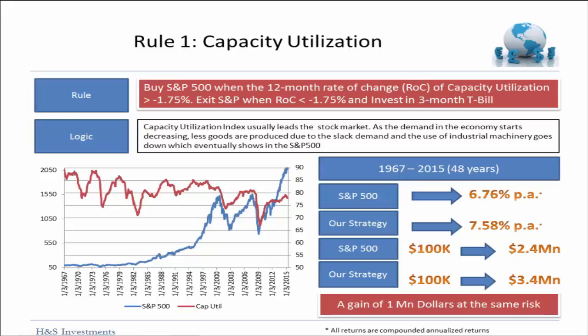Rule 1: Capacity Utilization. The rule is buy the S&P 500 when the 12-month rate of change of capacity utilization is greater than negative 1.75%, and exit when it is less than negative 1.75% and invest in 3-month T-bills.